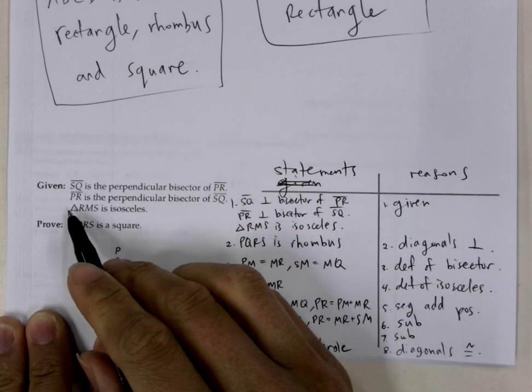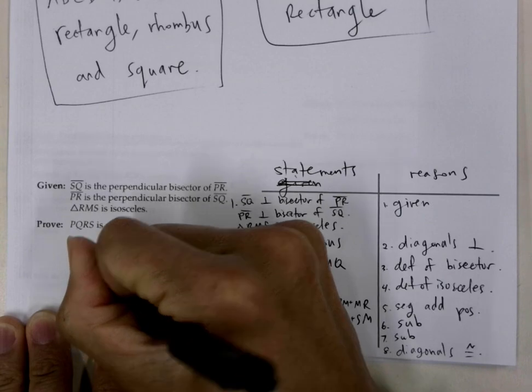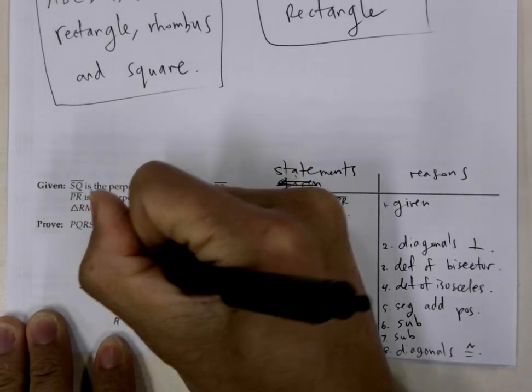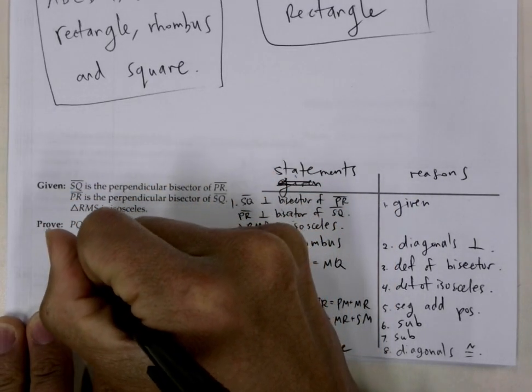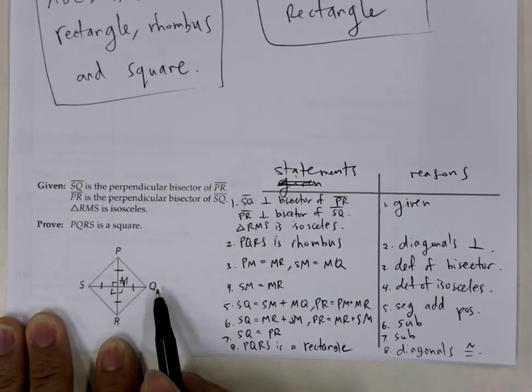So if SQ is a perpendicular bisector of PR, that means that RM is congruent to PM, and that SM is congruent to MQ.